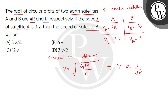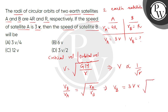Now we have to find VB. We write VB divided by VA equals the square root of RA divided by RB. Putting in the values, VB equals 3V multiplied by the square root of 4R over R, which gives us the square root of 4, equal to 2. So VB equals 6V. Satellite B's velocity is 6V — correct answer.